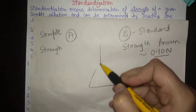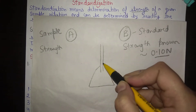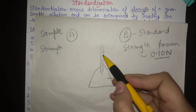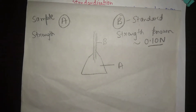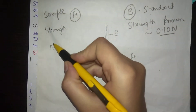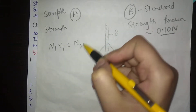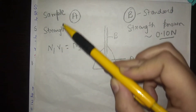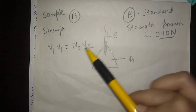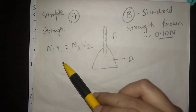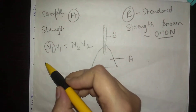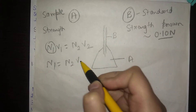We have a conical flask and a buret. In the conical flask we take sample solution A, and in the buret we take standard solution B. The endpoint is determined by a suitable indicator. We use the formula N₁V₁ = N₂V₂, where N₁ is the normality of sample A, V₁ is the volume of sample A used, N₂ is the normality of the standard, and V₂ is the volume of standard used. We need to find N₁, so N₁ = N₂V₂ / V₁.